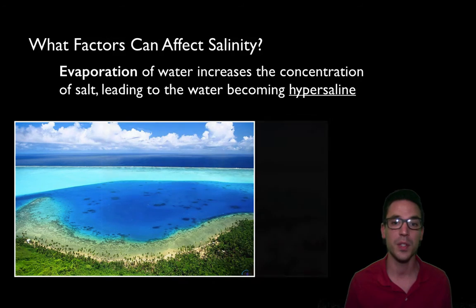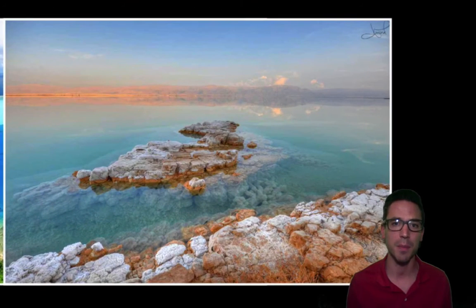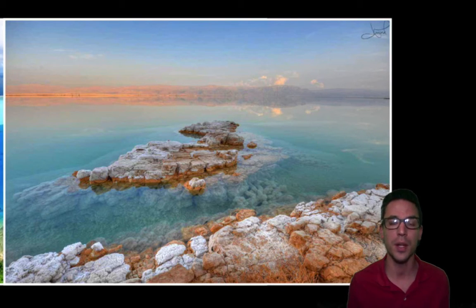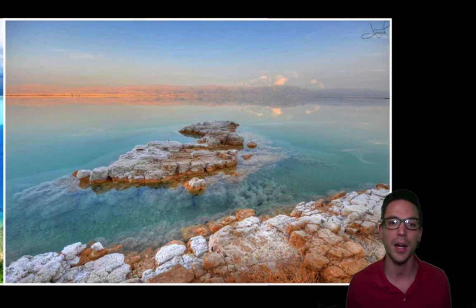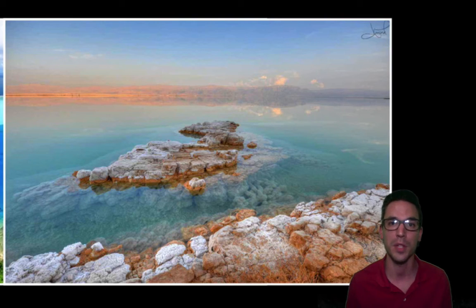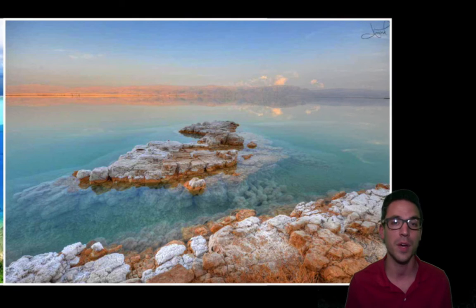A great example of this is the Dead Sea, found near Palestine and Jerusalem. Water feeds in from rivers bringing dissolved salts, but that water gets trapped and evaporates, leaving salts behind. Over time enormous amounts of salt have accumulated, with the salinity reaching about 350 parts per thousand — about 10 times more than the ocean. That's why it's called the Dead Sea: you typically don't find life living there.